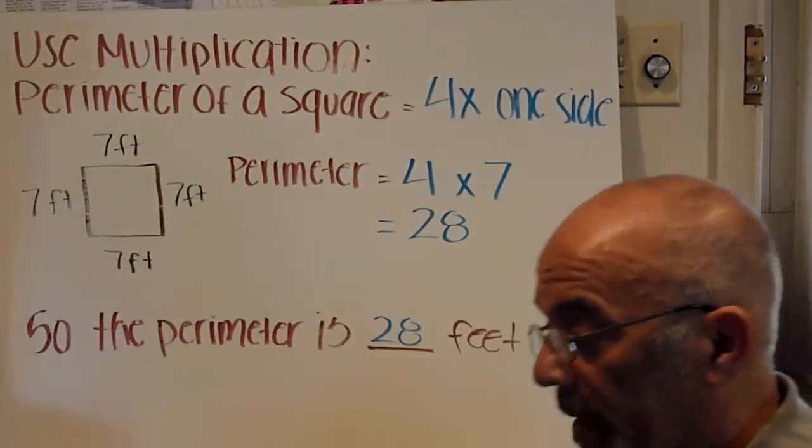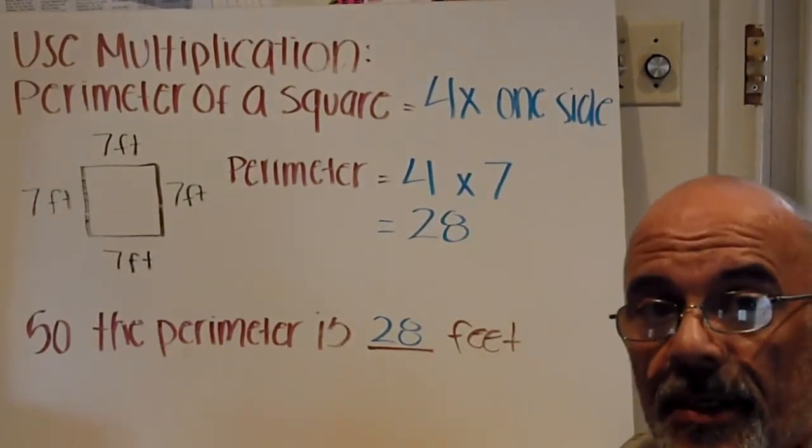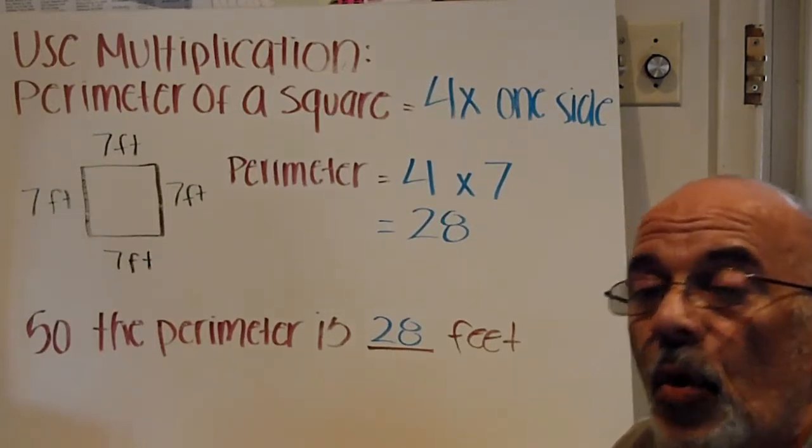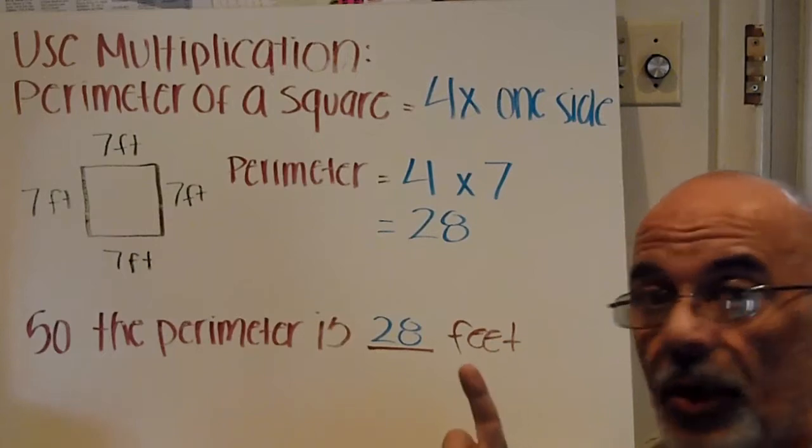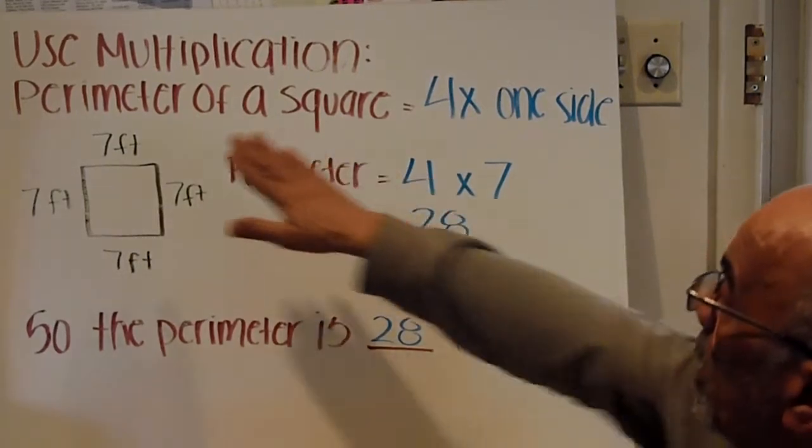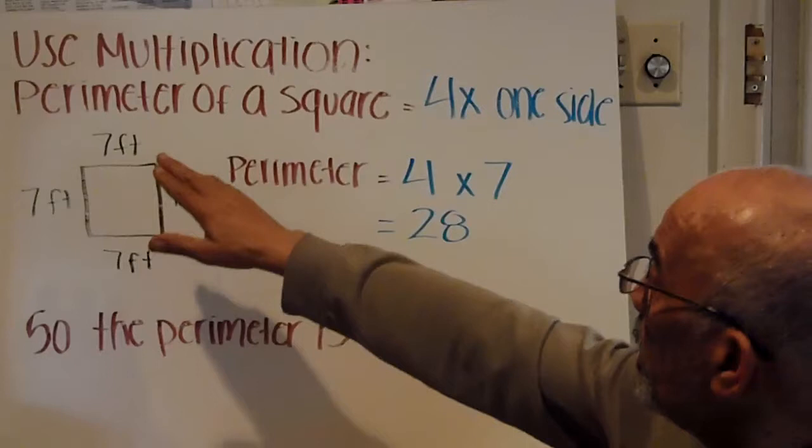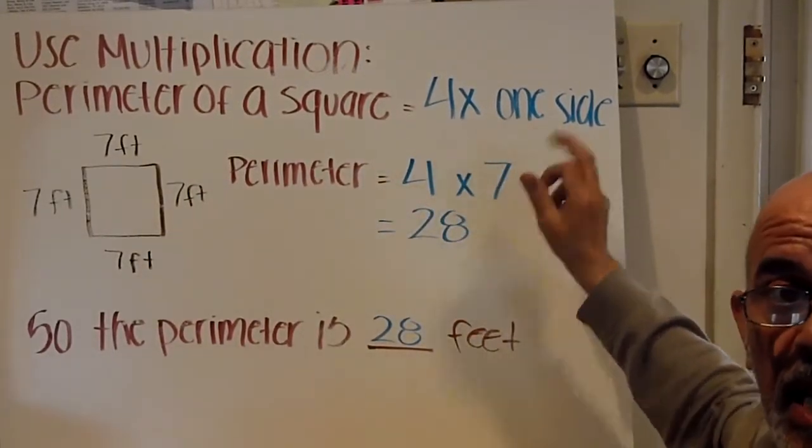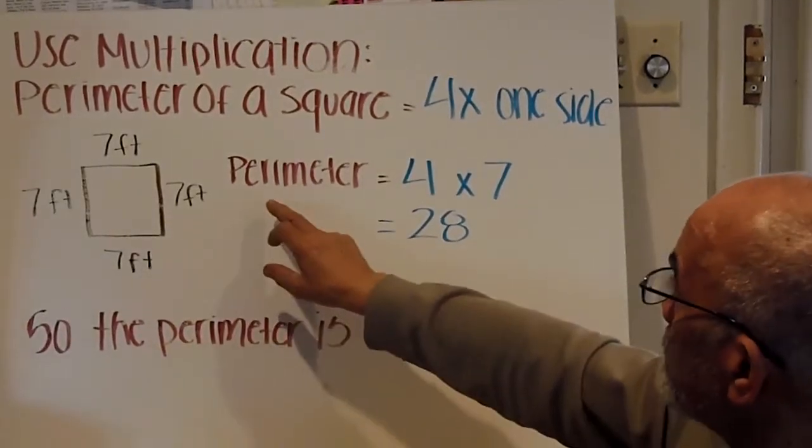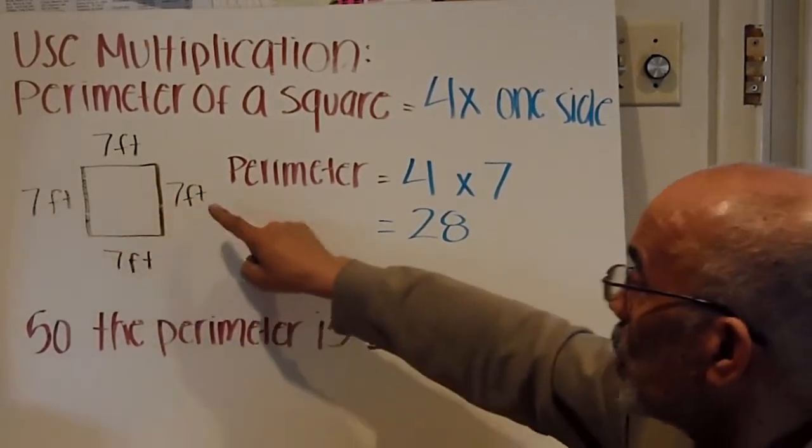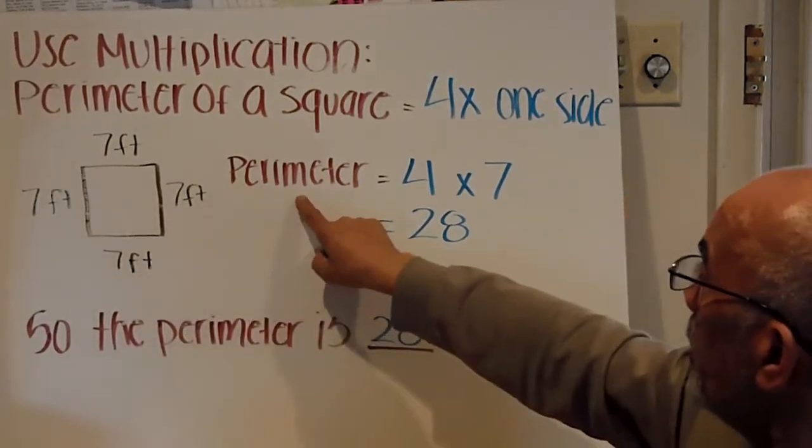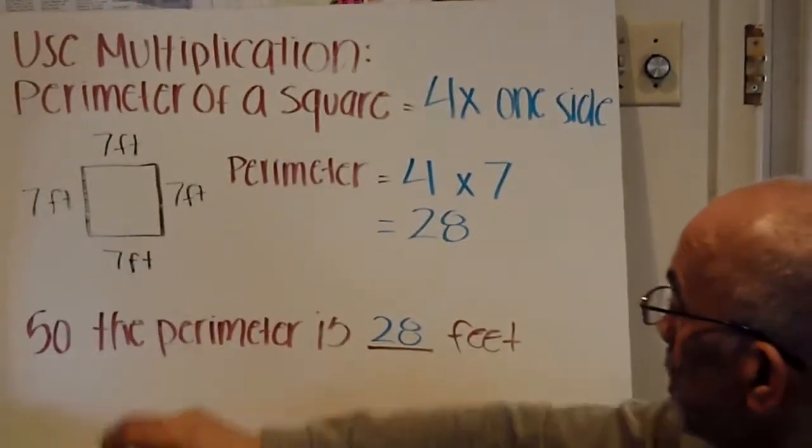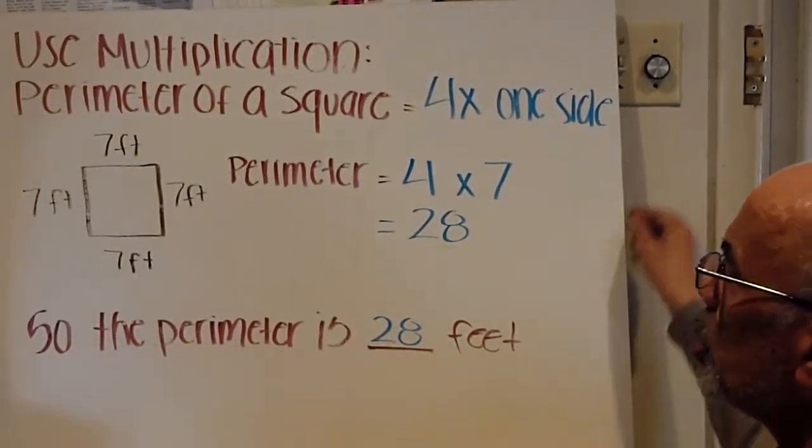There is also a multiplication formula to find the perimeter of a square. Now one thing we've got to know about squares is all sides are equal. So if you know one side, you know all four. The formula for perimeter of a square is four times one side, whatever that side may be. So in this case, we have a square with a side of seven. Perimeter equals four times seven, or twenty-eight. So the perimeter is twenty-eight feet.